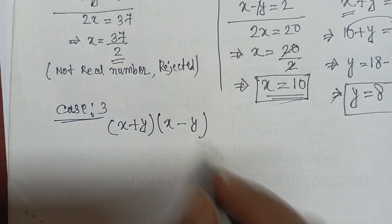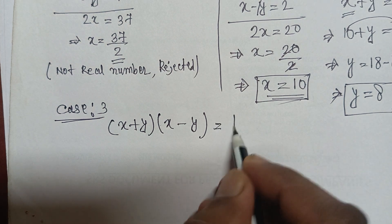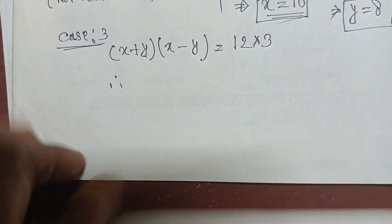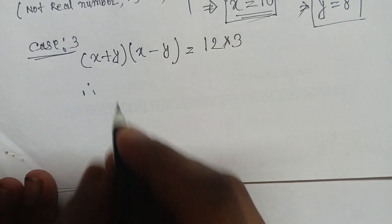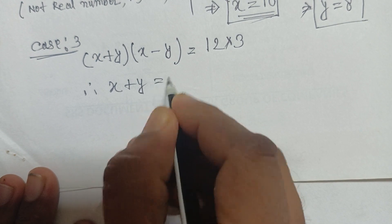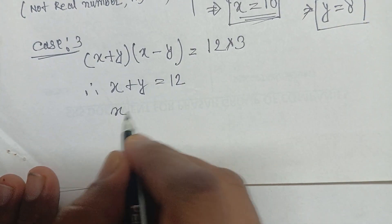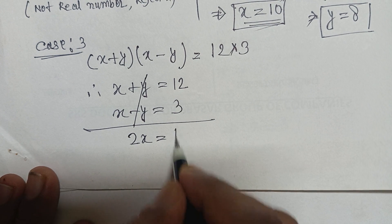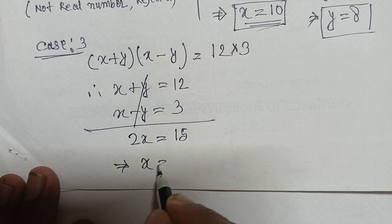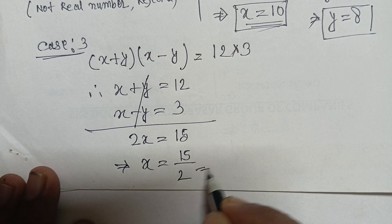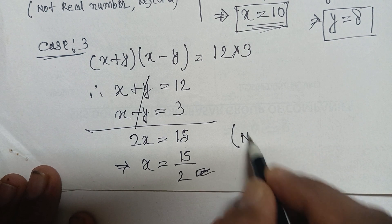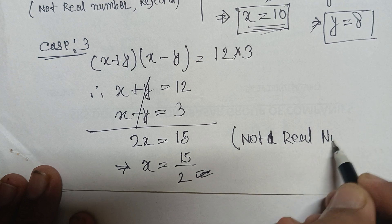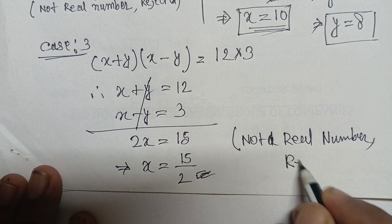For Case 3: x plus y equals 12 and x minus y equals 3. Adding these, we get 2x equals 15, so x equals 15 over 2. This is a fractional number, not a natural number, so Case 3 is also rejected.